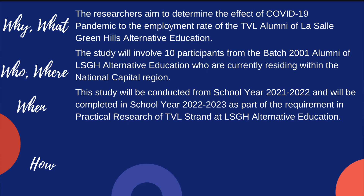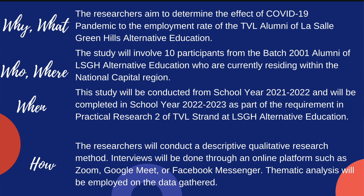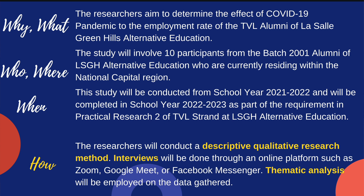You can also be very specific as to when the study started and when it will be completed. And lastly, for HOW: 'The researchers will conduct a descriptive qualitative research. Interviews will be done through an online platform such as Zoom, Google Meet, or Facebook Messenger. Thematic analysis will be employed on the data gathered.' This example is just short — you can give more details if necessary to explain further how you are going to conduct the research.